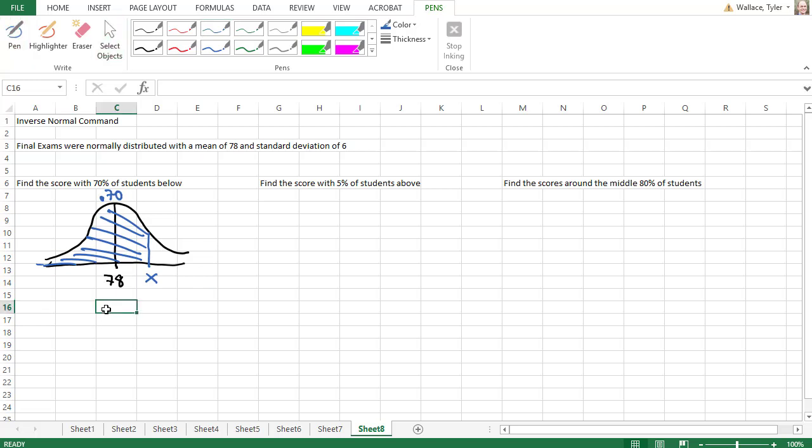That's a nice one because Excel already does areas to the left. So I can say equals norm.inv for inverse, because we already have the probability and we're looking for the x value. The probability is 0.70, the mean is 78, and the standard deviation is 6.